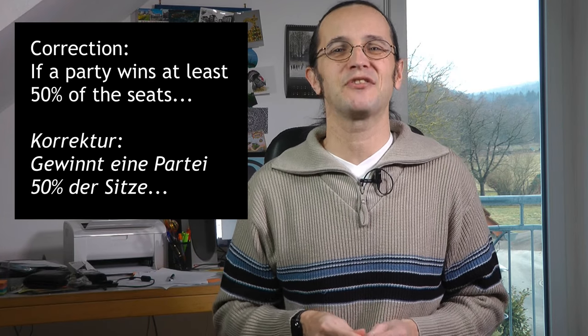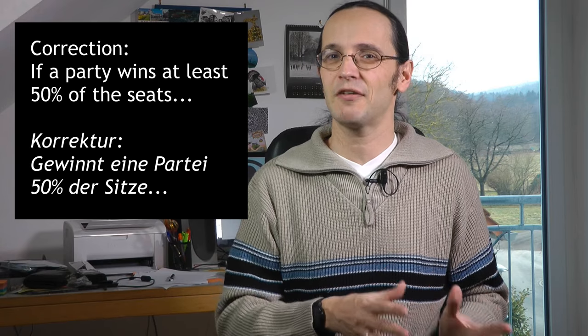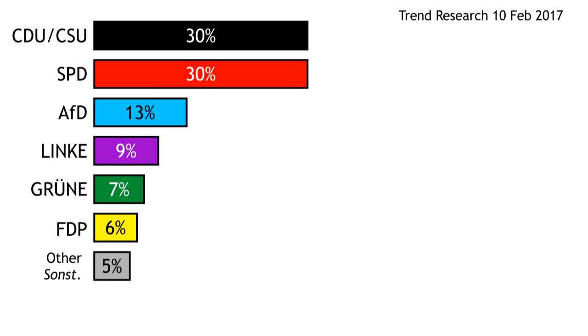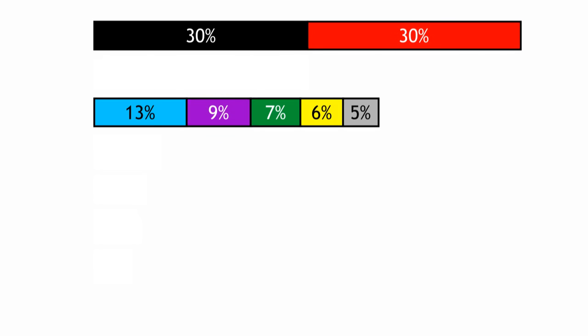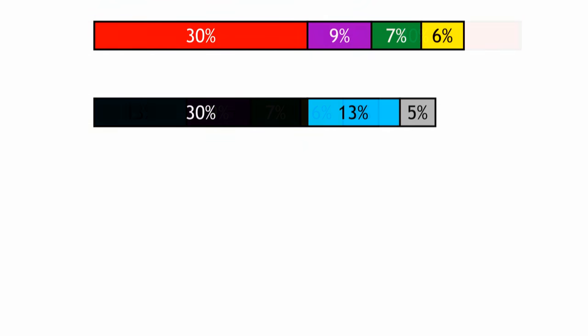If a party wins at least 50% of the votes, they can form the next government with all the other parties in opposition. But this pretty much never happens, and so the race is on to form a coalition. For example, here's a recent opinion poll showing the SPD and the Union on 30% each. If this were an election result, they could form a coalition with 60%. But if they can't agree on the terms of the coalition, then instead the SPD might, for example, form a coalition with the Left, the Greens, and the FDP to get 52%.